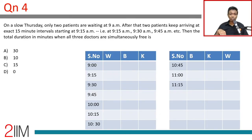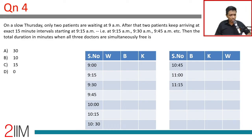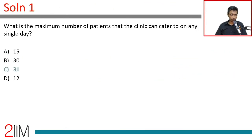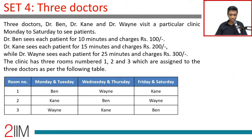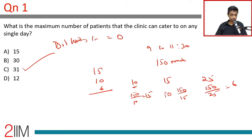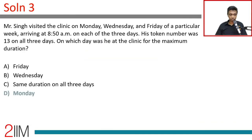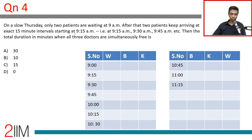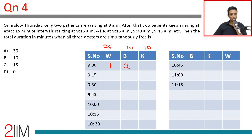On a slow Thursday, only two patients are waiting at 9am. After that, two patients keep arriving at exact 15-minute intervals starting at 9:15am — so pairs arrive at 9:15, 9:30, 9:45. The question asks for the total duration in minutes when all three doctors are simultaneously free. On Thursday, the room assignment sequence is Wayne, Ben, Cain — so WBK. Wayne takes 25 minutes, Ben takes 10 minutes, Cain takes 15 minutes. At 9 o'clock, the two waiting patients — tokens 1 and 2 — go to Wayne and Ben.